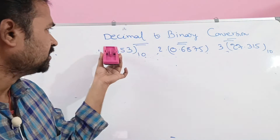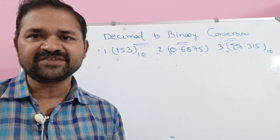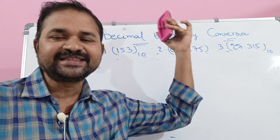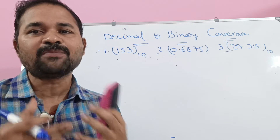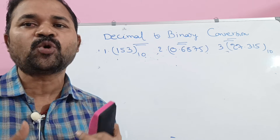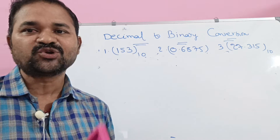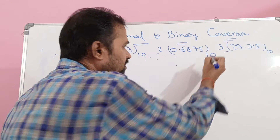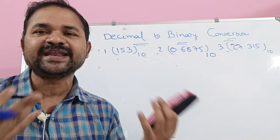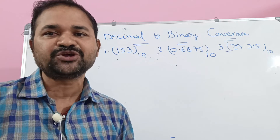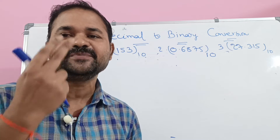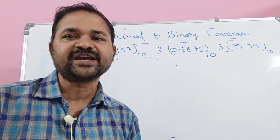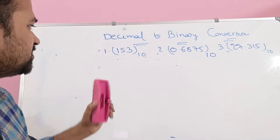Now let us discuss decimal to binary conversion. Three decimal numbers are given, and for these decimal numbers we have to construct the corresponding binary number. Decimal means the base value is 10 — a combination of 10 symbols from 0 to 9. Binary means base 2 — a combination of 2 symbols: 0 and 1.